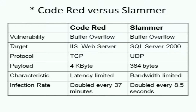Three years later, the Slammer worm appeared. Both Code Red and Slammer exploit buffer overflow vulnerabilities. However, Code Red targeted a web server while Slammer targeted Microsoft SQL Server 2000. Code Red used TCP (HTTP), while Slammer used UDP messages. The payload was 4 kilobytes for Code Red but drastically reduced to 384 bytes for SQL Slammer. Code Red was latency-limited, while Slammer was bandwidth-limited.